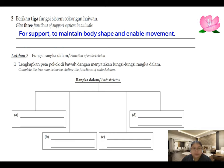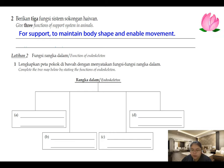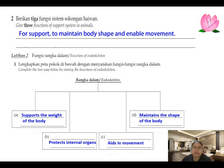Question two also asks you to complete the mind map stating the functions of the endoskeleton. The answers are: support your body weight, maintain your body shape, enable movement, and protect your internal organs. These are all the important functions of the endoskeleton.